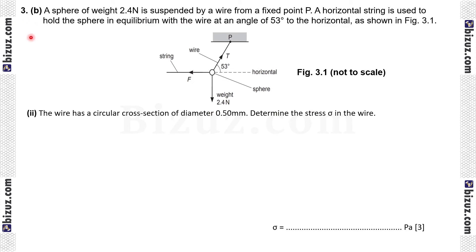Question number 3b2, the wire has a cross section of diameter 0.50 mm. Determine the stress sigma in the wire. Sigma that is stress equal to force divided by area of cross section. Putting values of F and area 3 divided by pi D square by 4 and putting the value of D, 0.5 into 10 to the power minus 3 square. Then after simplification we can write 3.0 times 4 divided by pi D square, which is equal to 1.5 multiplied by 10 to the power 7 Pascal.